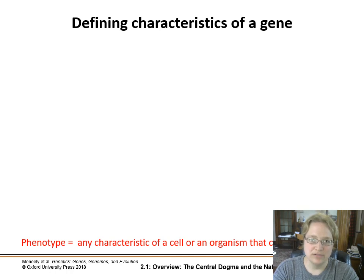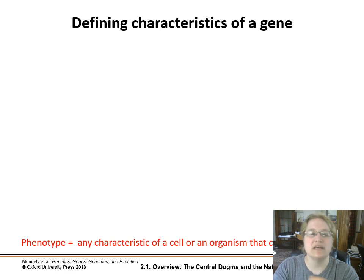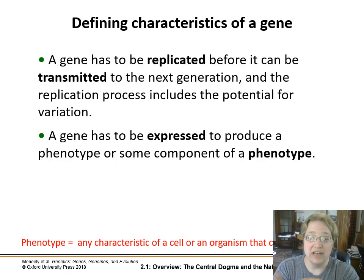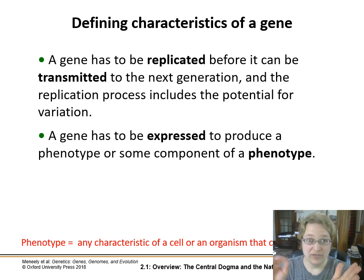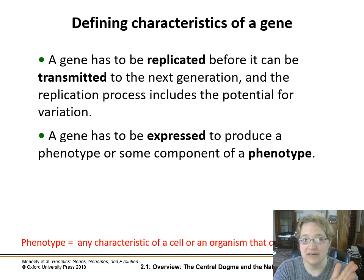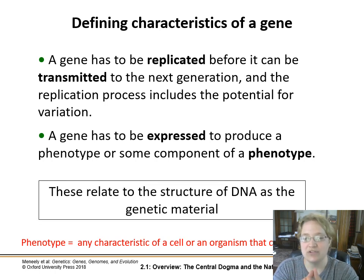When we talk about a gene, we can talk about defining characteristics — things something has to have in order to be considered a gene. First, it has to be able to be replicated; you have to be able to make a copy of it and give that to your offspring so it can be transmitted to the next generation. This includes a chance of error — every time you copy it there could be something new happening, and that's mutation: changes to the DNA sequence.